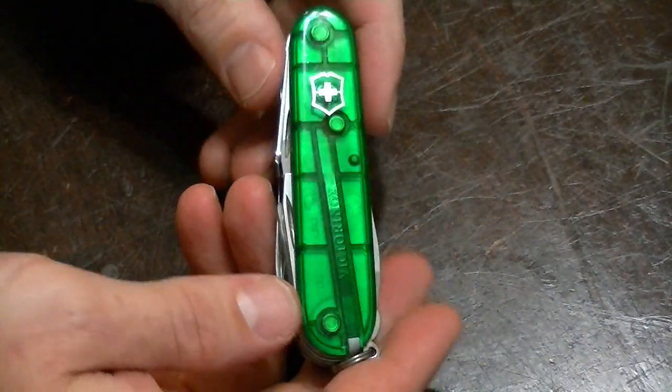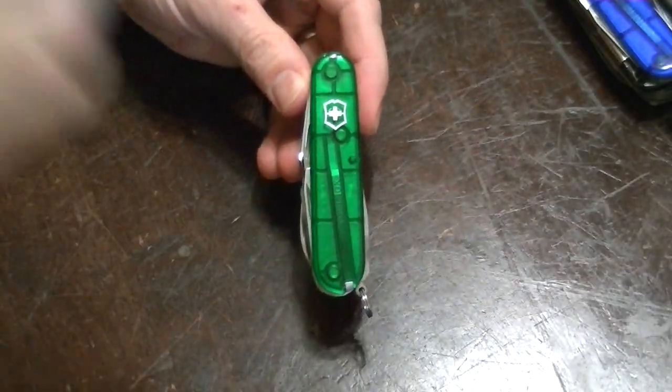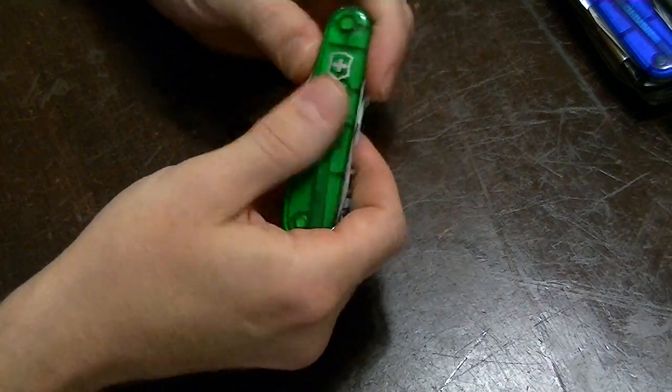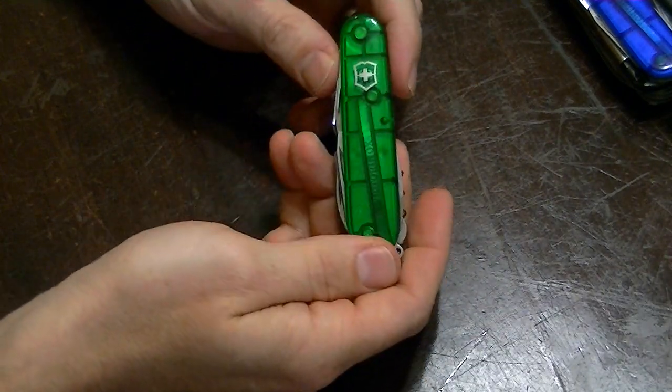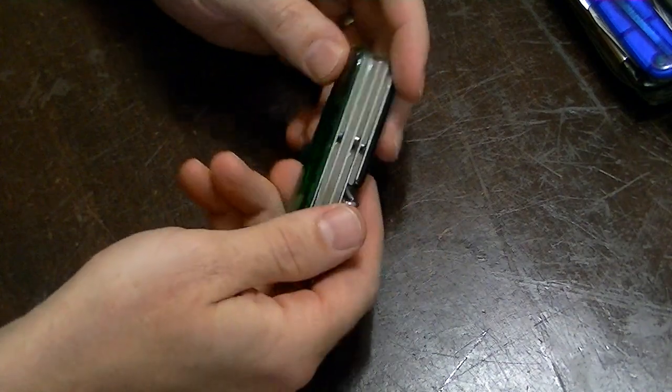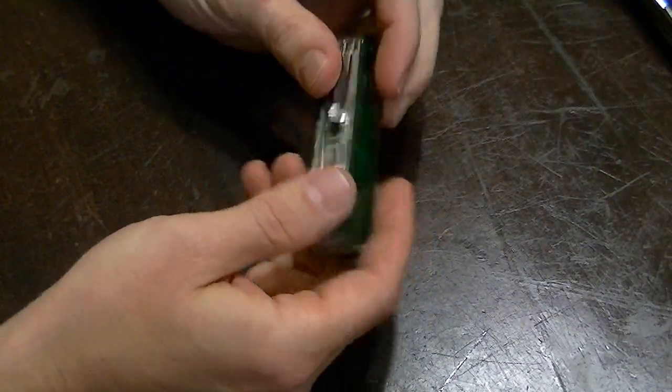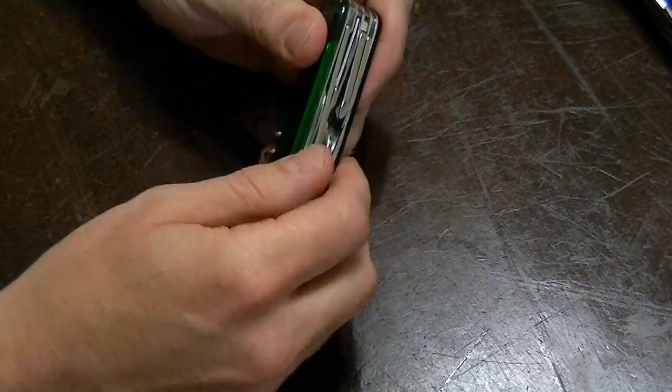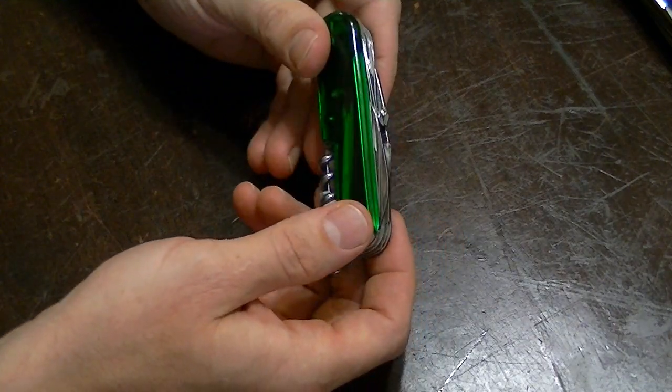Next up, Explorer Plus. It's a little bigger knife, so we've got to zoom back. I got it in the Emerald Translucent Scales. I really like that. But this just has a great tool set. I never feel like I'm unprepared when I have this one.